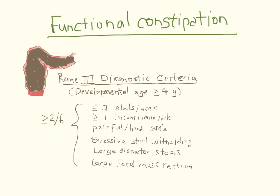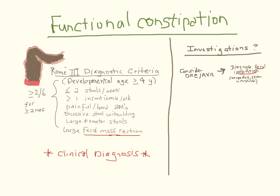The Rome 3 diagnostic criteria follow from this explanation. They include infrequent stools, hard or painful stools, fecal incontinence, excessive stool retention with associated behaviors and/or postures, and large caliber stools either evident on digital rectal examination or by history. In terms of other investigations, while neither a DRE nor abdominal x-ray are needed routinely, either can help diagnose fecal impaction in the rectum when it is suspected on history and the abdominal and/or rectal examination is unreliable or refused. Knowledge of whether or not there is fecal impaction has some diagnostic relevance but more importantly can help guide management.